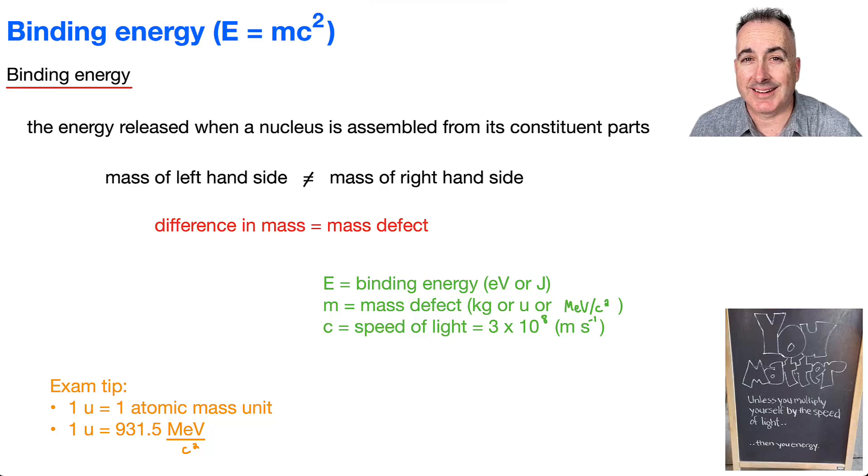Let's talk about binding energy and Einstein's famous equation, E equals mc squared. That's why I put this one here. You matter unless you multiply yourself by the speed of light, then u energy. And actually, that's even wrong. It's supposed to be the speed of light squared, if anything. Well, let's learn about binding energy.